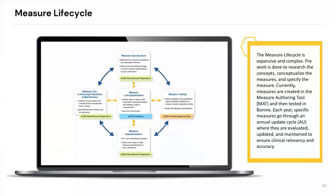Let's dive into our content. This is a high-level overview of the measure life cycle. It's a very expansive and complex life cycle — a lot of pre-work is done: we have to do research, conceptualize what the measure will be, and specify the measures. Currently, measures are created in the Measure Authoring Tool, or MAT, and then tested in Bonnie. Each year, specific measures go through an annual update cycle, or AU, where they are evaluated, updated, and maintained to ensure clinical relevancy and accuracy. As you can see in this diagram, it's very much a circular process.